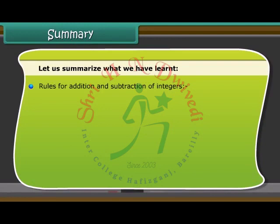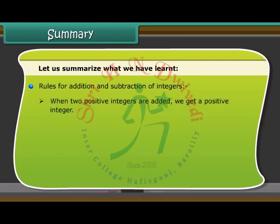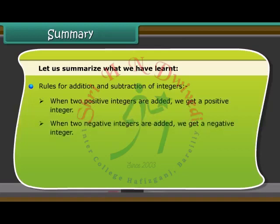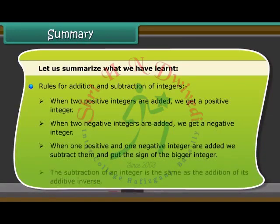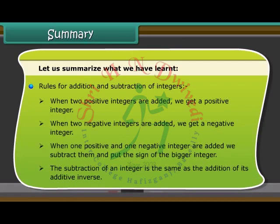Rules for addition and subtraction of integers. One: When two positive integers are added, we get a positive integer. When two negative integers are added, we get a negative integer. When one positive and one negative integer are added, we subtract them and put the sign of the bigger integer. The subtraction of an integer is the same as the addition of its additive inverse.